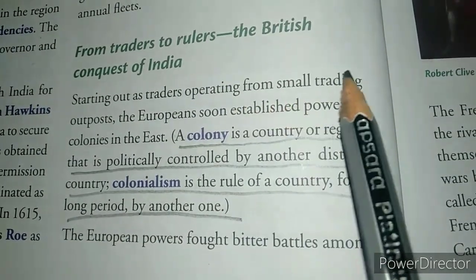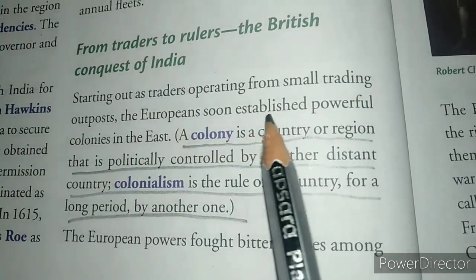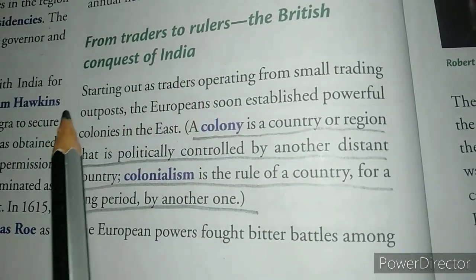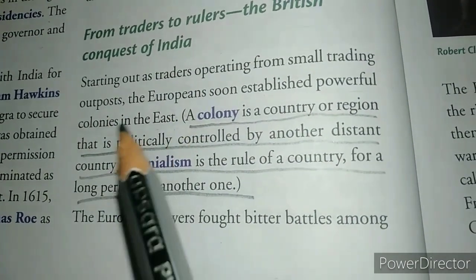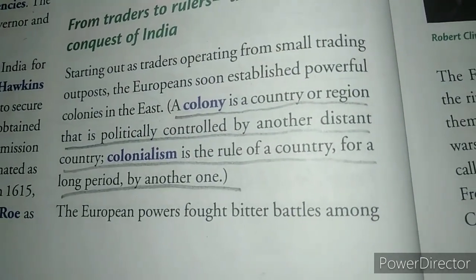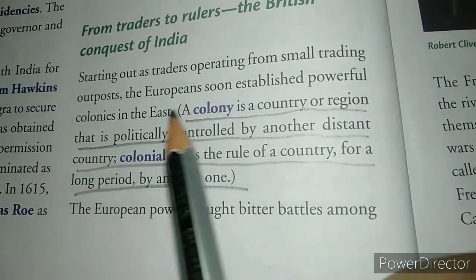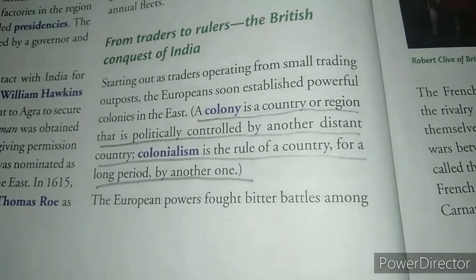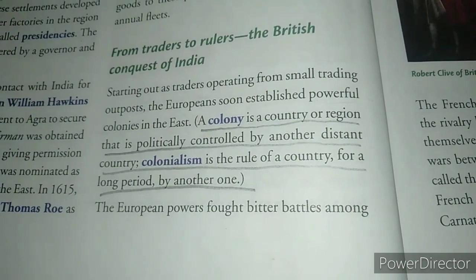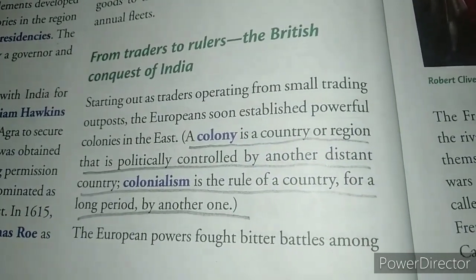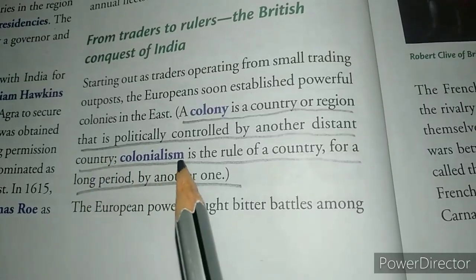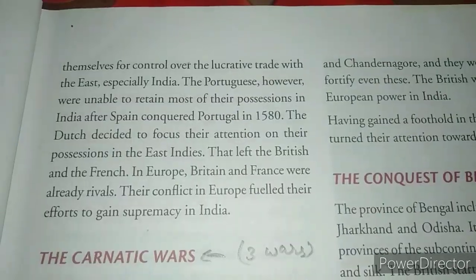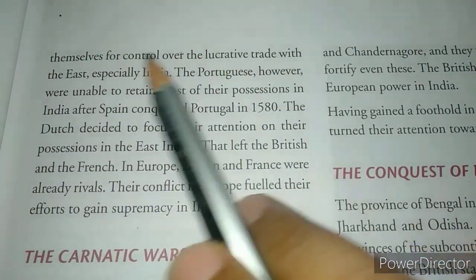Starting out as traders operating from small trading outposts, the Europeans soon established powerful colonies in the east. They started their journey as traders and ultimately colonized eastern areas, including India. Colonization means going to another place and establishing your power — setting up a colony. The process of colonization is called colonialism.